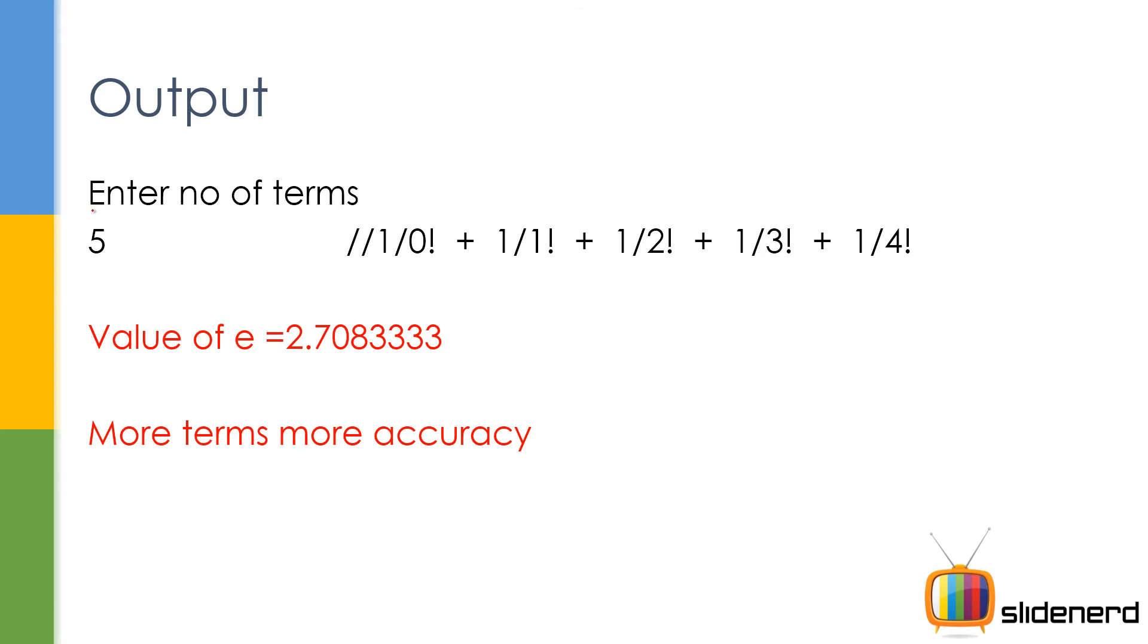I ask the user to enter the number of terms. He says 5. I'm gonna calculate the first 5, that is 1/0! plus 1/1! and so on. And you see the value of e is going to be 2.708.